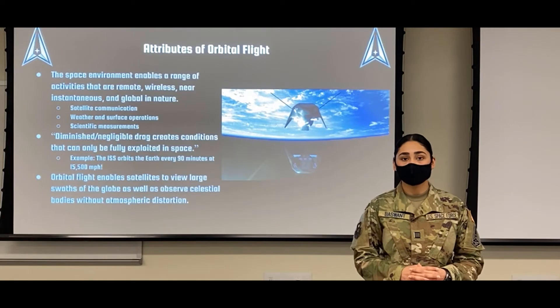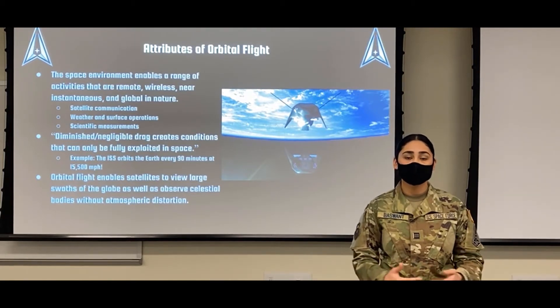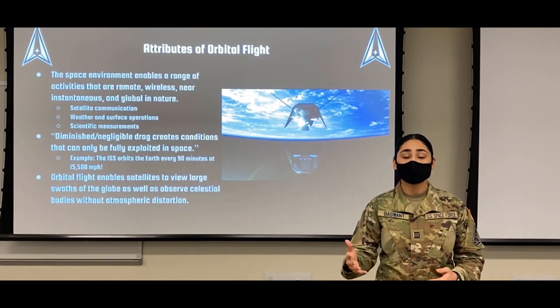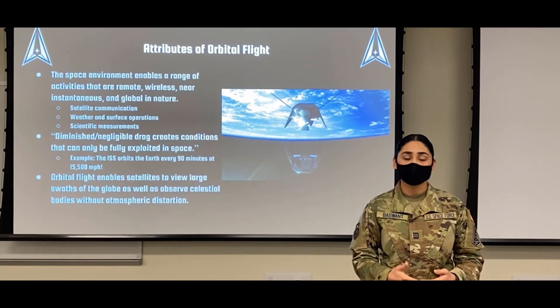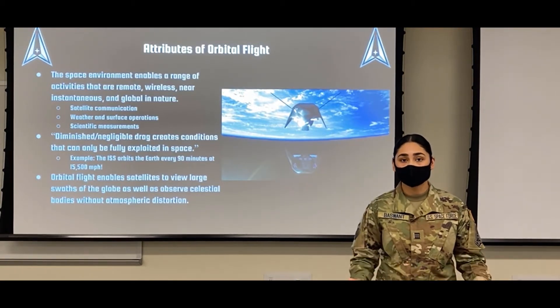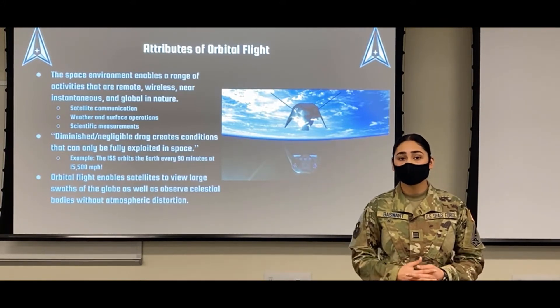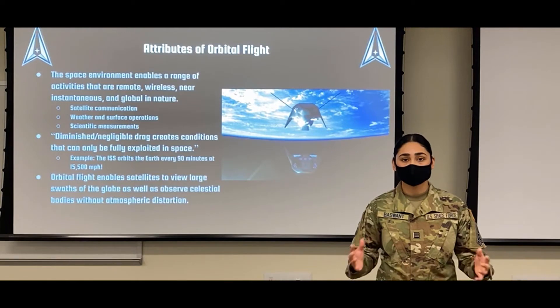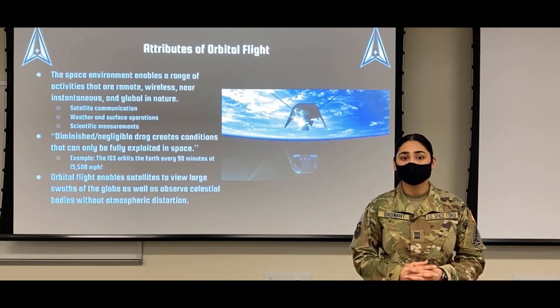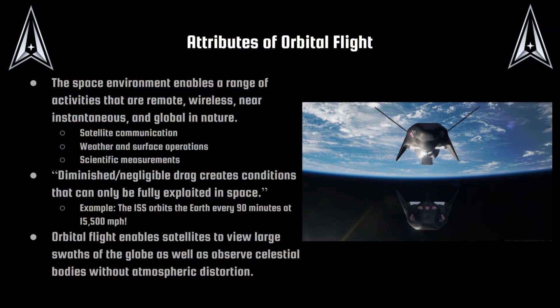An aircraft's drag constantly prevents its movement, requiring continuous thrust to remain in flight. A spacecraft, on the other hand, wouldn't need any additional thrust or power to remain in orbit, as there is no drag preventing it. For example, the ISS orbits the Earth every 90 minutes at 15,500 miles per hour — it can do this because there is no additional drag preventing its movement.